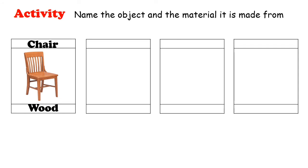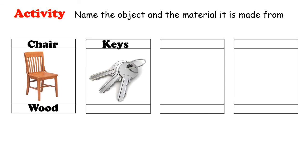Let us go to the next example. What object do you see here? These are keys — very good. What is the material that makes the key? Metal — very good.